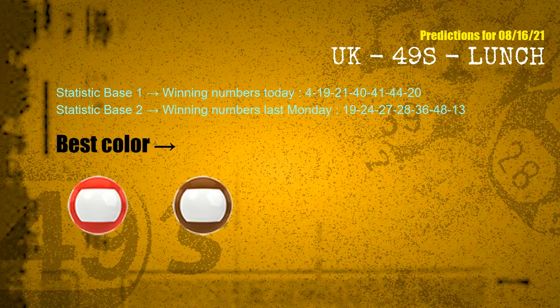According to the statistics above, with winning numbers today 04, 19, 21, 40, 41, 44, 20, and winning numbers last Monday 19, 24, 27, 28, 36, 48, 13, the frequent following colors are red and brown.